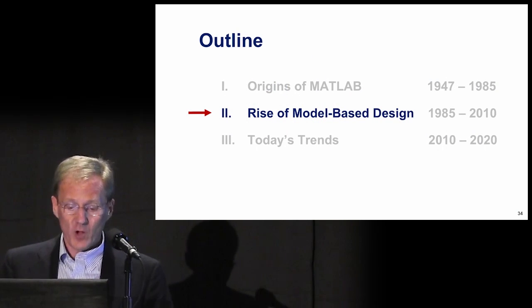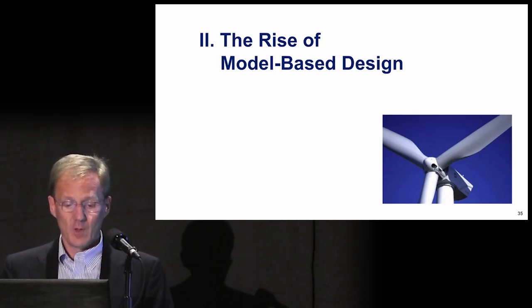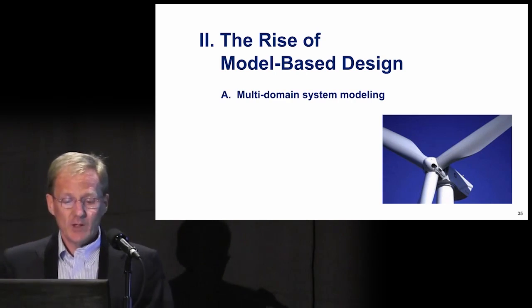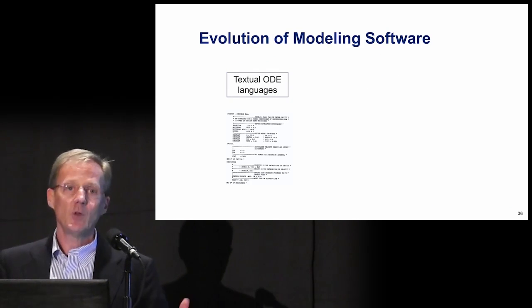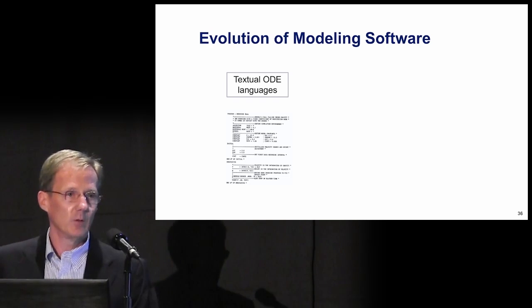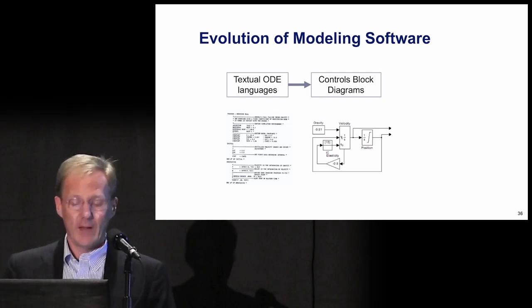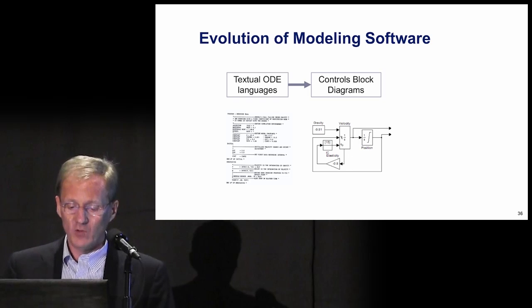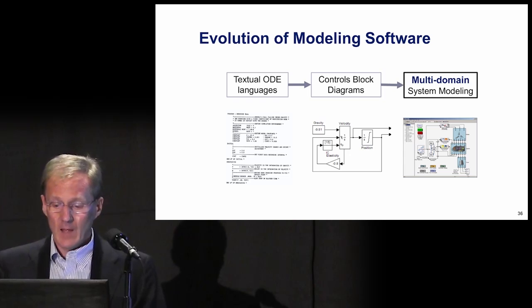Now I'm going to move to the second part of my talk, which talks about the rise of model-based design to help with these issues. The solution to the trouble in industry came in two parts. The first part is multi-domain system modeling. We can look at the evolution of modeling software — it began with textual ODE languages. Simnon from Lund University was one of the originals. The world moved to graphical block diagrams that handle control diagrams. But the evolution needed to really model these systems correctly is multi-domain systems modeling.